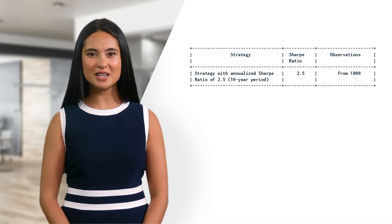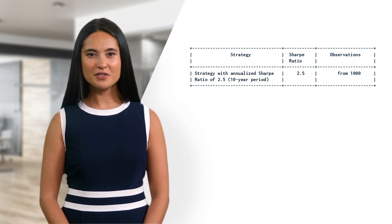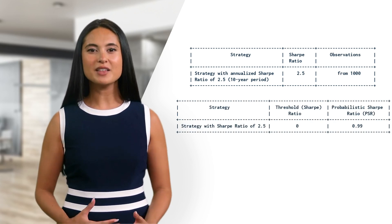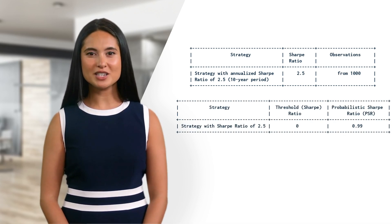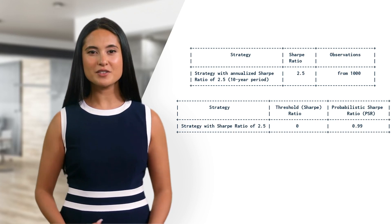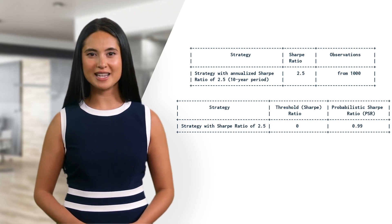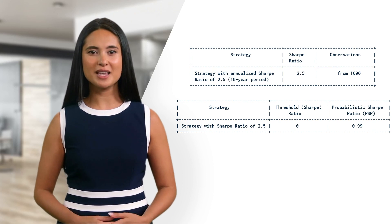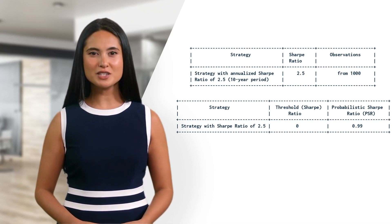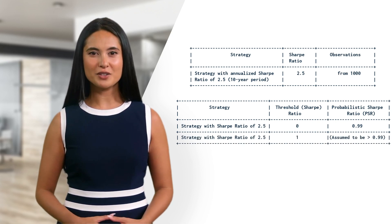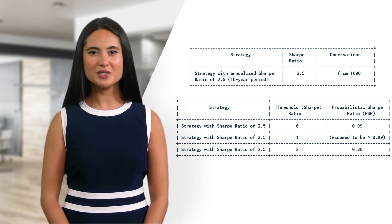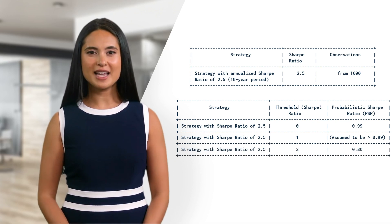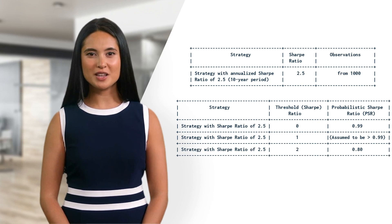Let me give you an example. Suppose we have tested 1,000 strategies over a 10-year period and found one strategy with an annualized Sharpe Ratio of 2.5 and a PSR of 0.99. This means there is a 99% chance this strategy has a true Sharpe Ratio above 0, our threshold. However, if we use a higher threshold such as 2, we may get a PSR of 0.8, meaning only an 80% chance the strategy has a true Sharpe Ratio above 2.